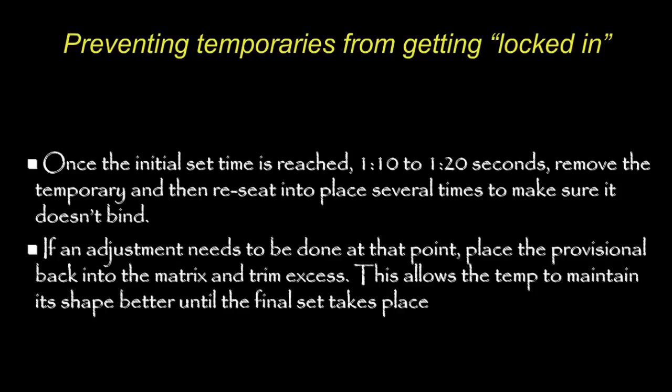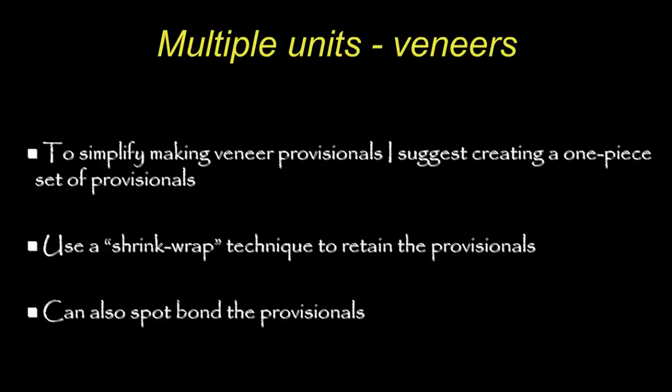For Perfect Temp 10, the initial set time is about a minute and 30 seconds. Place it in the mouth and after that time, remove it and reseat it a couple of times to make sure it doesn't bind. I usually place the provisional back into the matrix and trim the excess — this allows the temporary to maintain its shape. If I hold it in my hand during the two-to-three minute full set time, it can slightly alter shape, but materials are getting better.